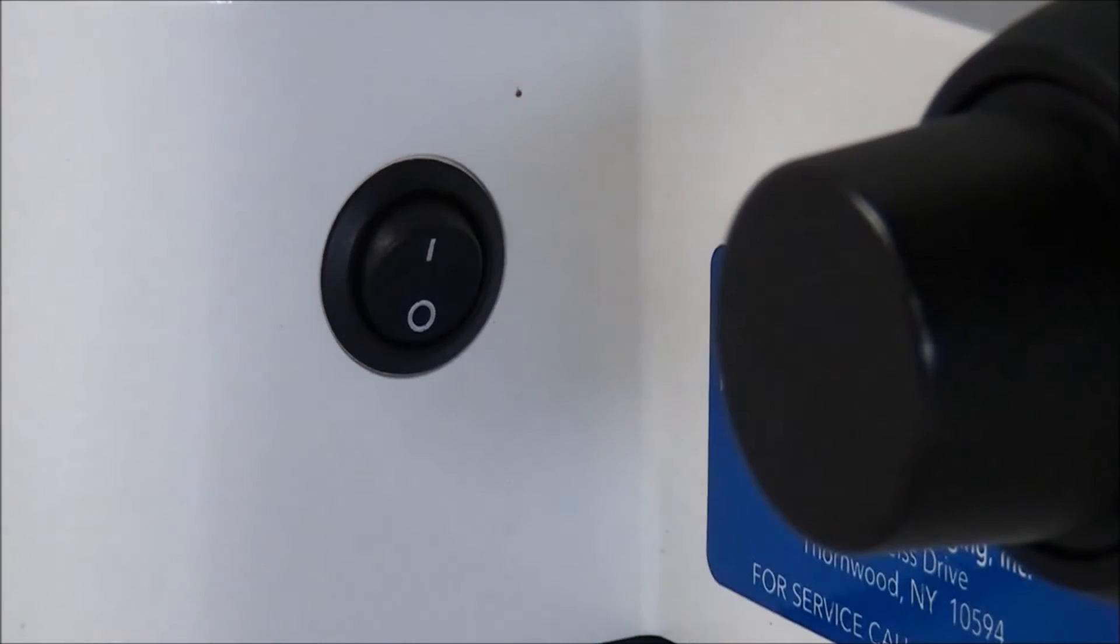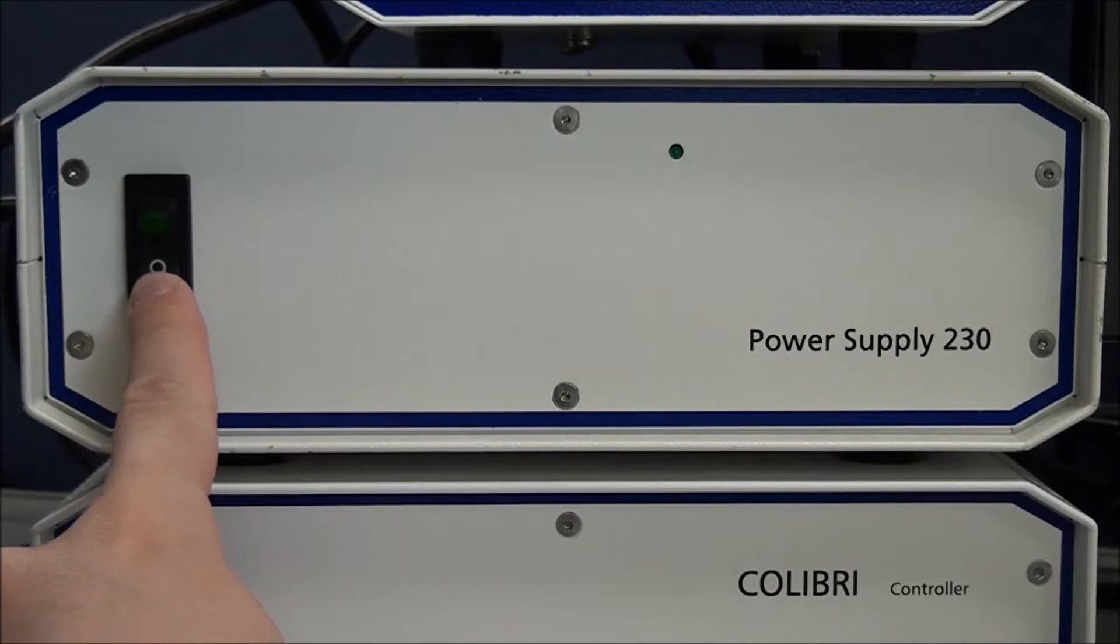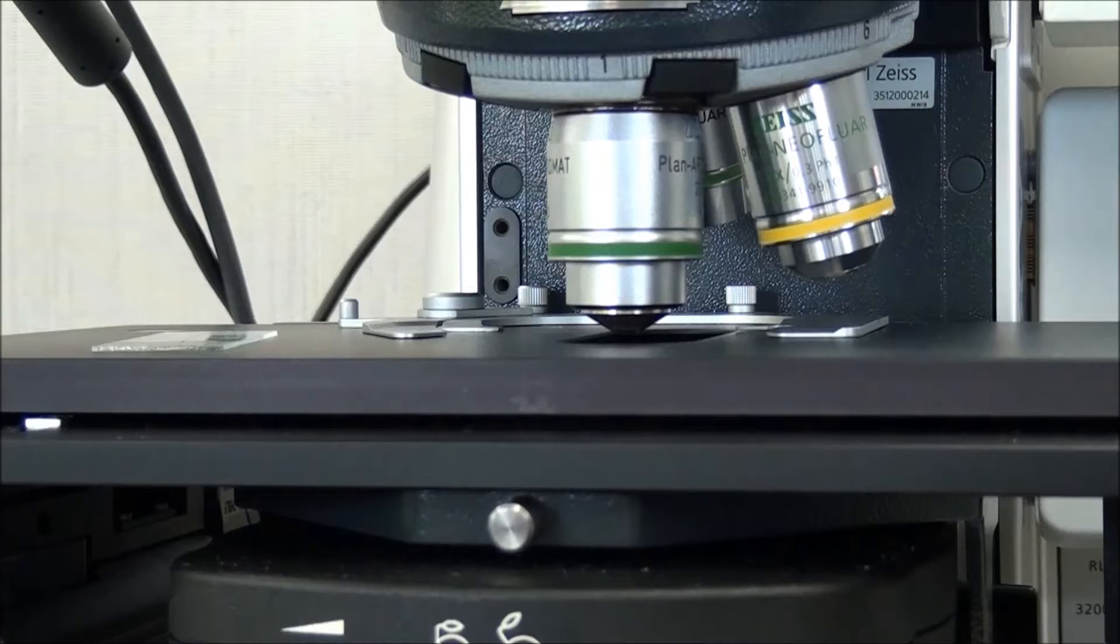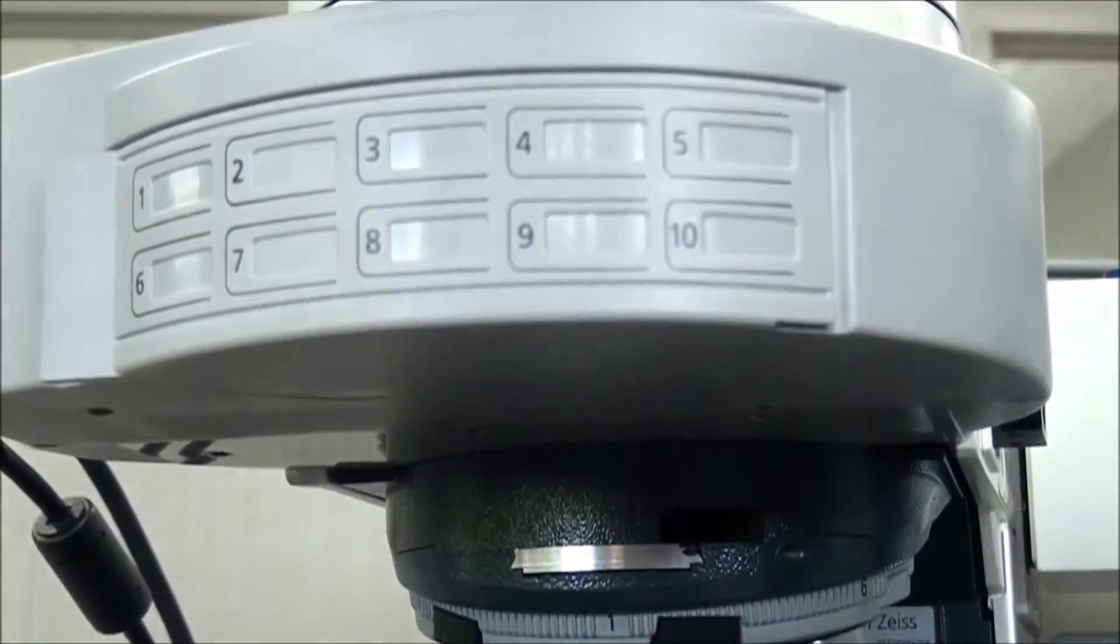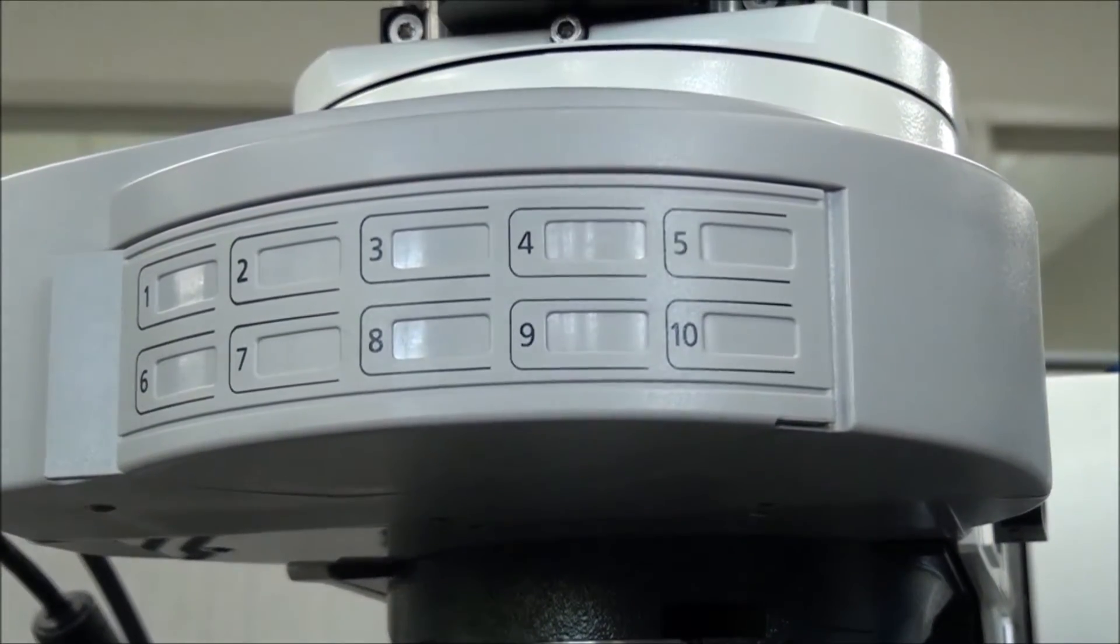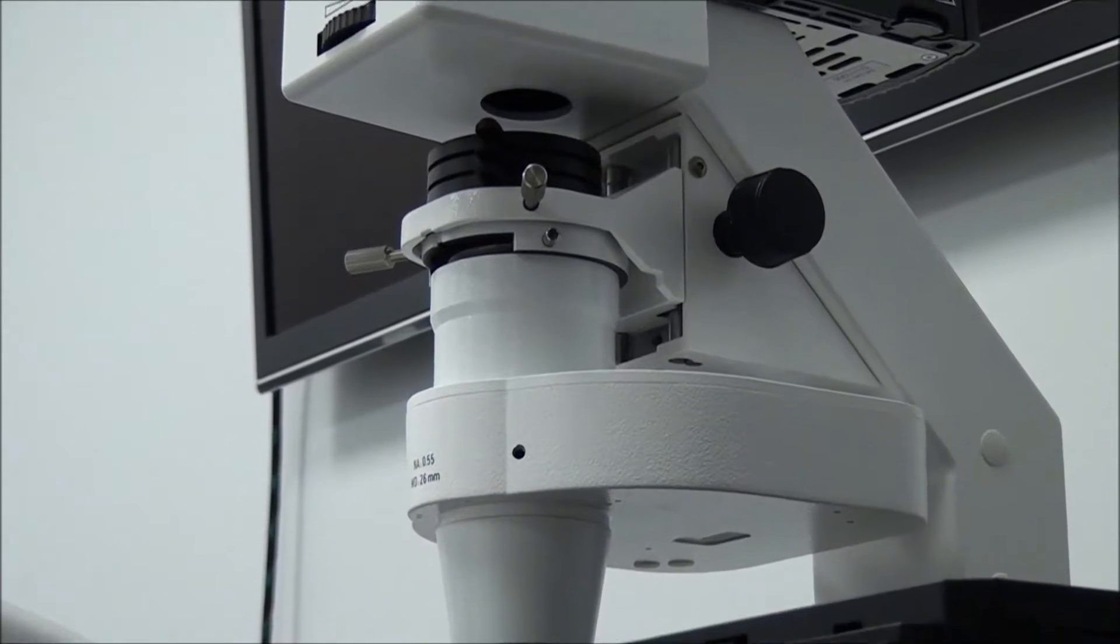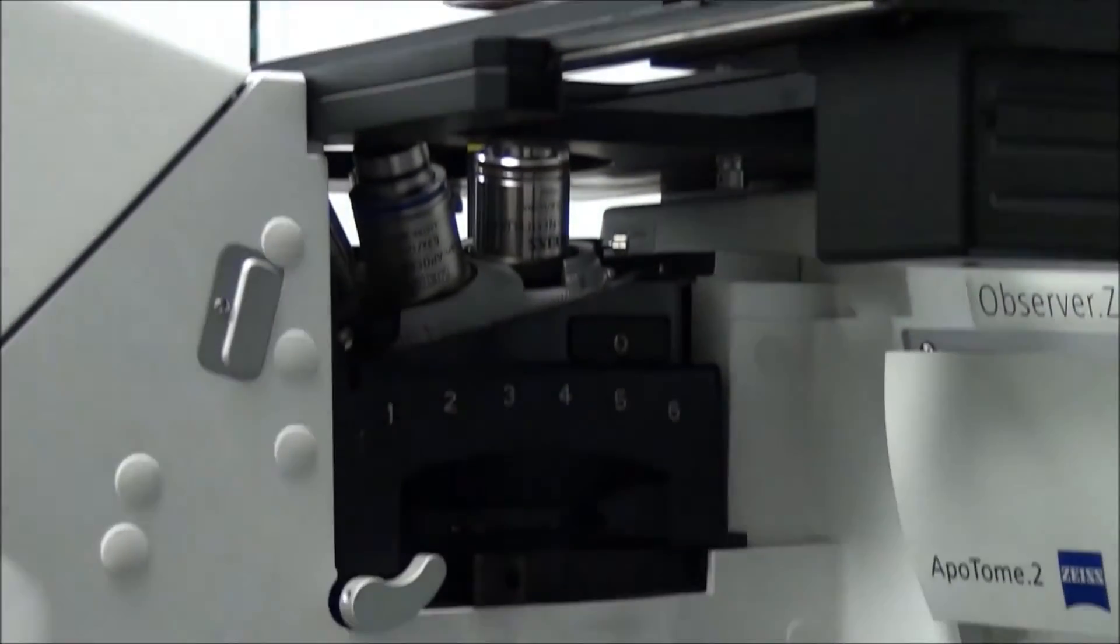Start by switching the microscope off from the stand or the attached power supply. Locate the reflector changer access door. On upright microscopes, this is a gray cover located above the objectives. On inverted stands, access is made through a panel underneath the stage.